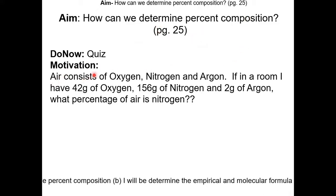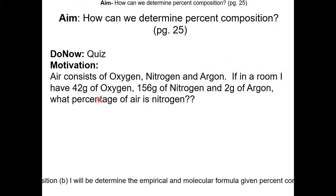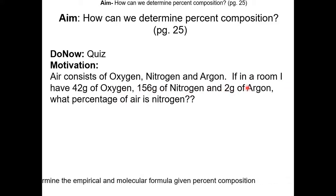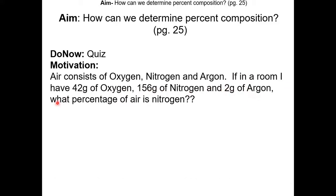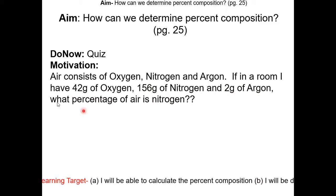Air consists of oxygen, nitrogen, and argon. If in a room I have 42 grams of oxygen, 156 grams of nitrogen, and 2 grams of argon, what percentage of the air is nitrogen? The first step is to figure out the mass of air.